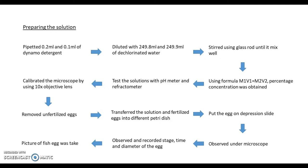The microscope was calibrated using a 10x objective lens before measuring the dimensions and structure of the egg. The unfertilized eggs at the bottom of the beaker were removed. Both solutions with different concentrations were transferred into two different petri dishes. The fertilized eggs were also transferred into two different petri dishes. The eggs were placed on two different depression slides with a small amount of experimental solution and observed under a light compound microscope.